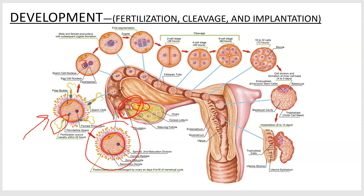The sperm nucleus and egg nucleus fuse, and now you've got a diploid organism. It starts to divide — these first divisions are called cleavage. They go two cell, four cell, eight cell, sixteen cell, just doubling. The cells produced through these first couple of divisions are called blastomeres. All four of these are blastomeres. Just know that those first cells are called blastomeres.